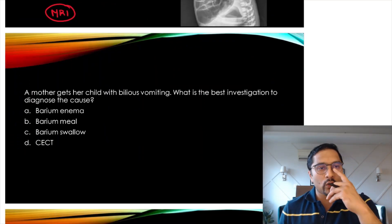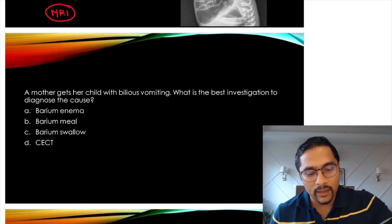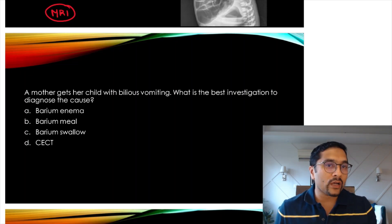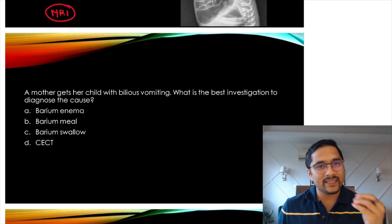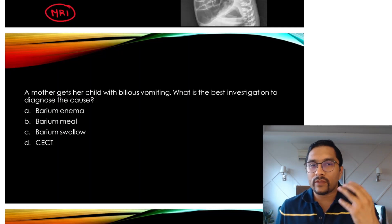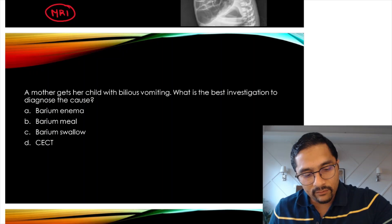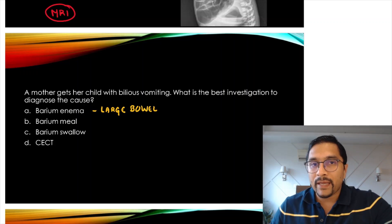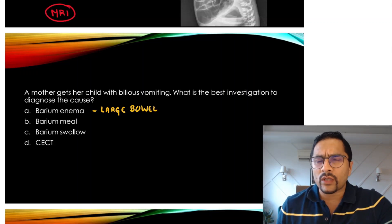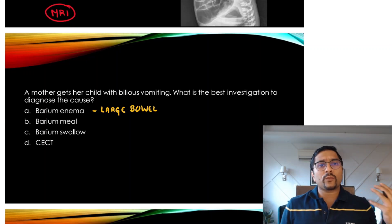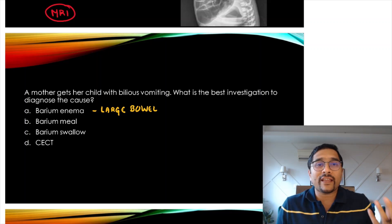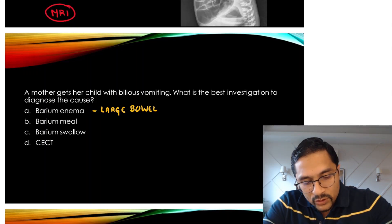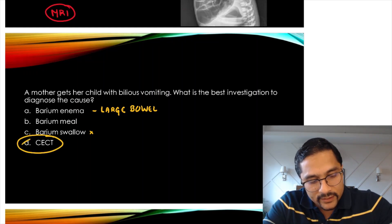A clinical question: a mother brings a child with bilious vomiting. We know that bilious vomiting means the block is beyond the second part of the duodenum. Barium enema tells us about the large bowel, barium meal about stomach and duodenum — but in an obstructed system, barium will also get obstructed and not go forward. Barium swallow is mainly for esophageal abnormalities. So the best answer here is CECT — a contrast CT scan will tell us the problem.